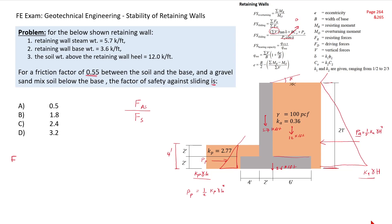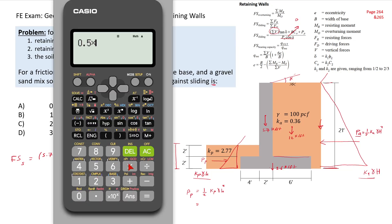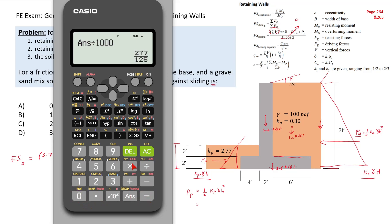The factor of safety against sliding equals the summation of vertical forces — which are these loads; if the soil were inclined we would also include the vertical component of the active force — so we have 5.7 plus 12 plus 3.6, multiplied by friction factor 0.55, plus 0, plus the passive force. Pp equals 0.5 multiplied by kp (2.77) multiplied by γ (100) multiplied by h² (4²), giving 2216 pounds per linear foot, or 2.216 kip per linear foot.